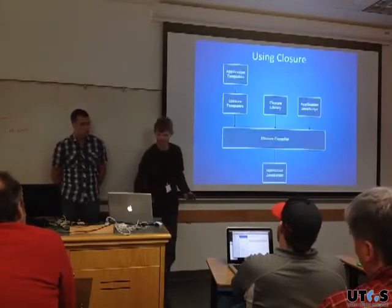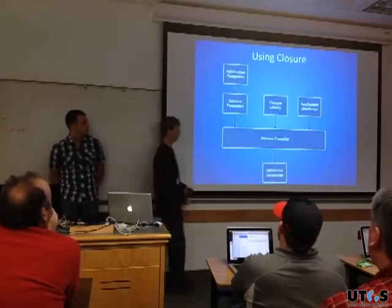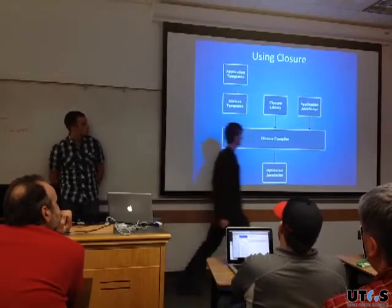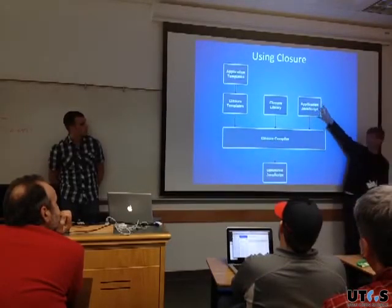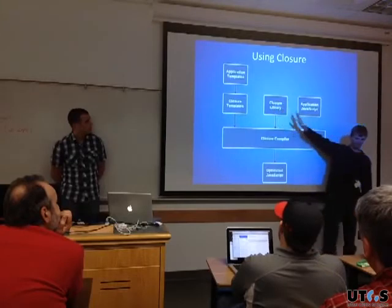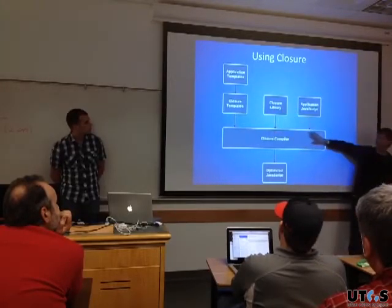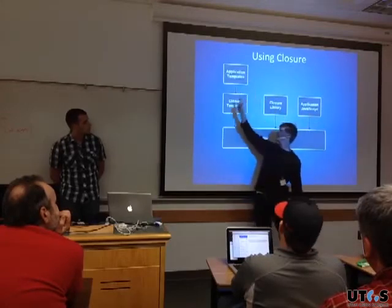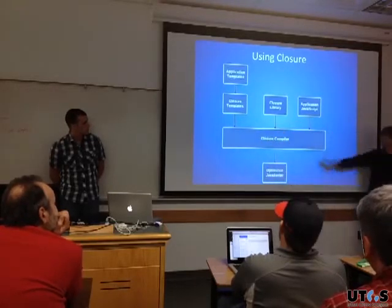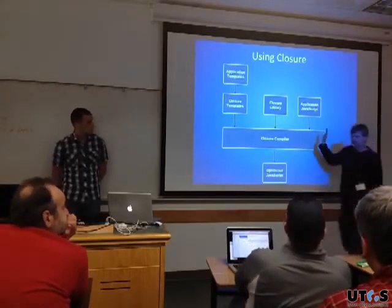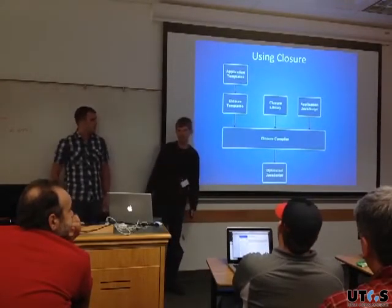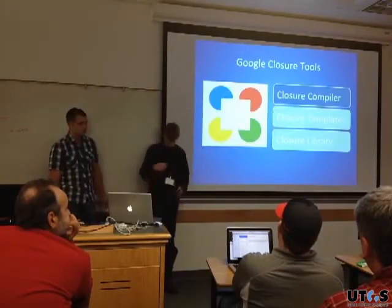You take those three components together — your application code, the Closure Library, and your compiled templates — and feed them all into the Closure Compiler. What it spits out is very optimized JavaScript. At development time you can have as many files as you want; the compiler produces one final JavaScript file for production. That's kind of how the tools work together at a high level. The first thing we'll talk about is the Closure Compiler.